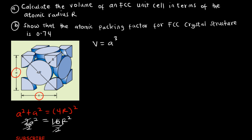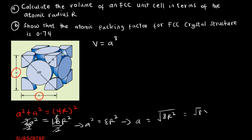Dividing both sides by 2 gives A² = 8R². Taking the square root, A = √(8R²) = √8 × √(R²). The square root of 8 is 2√2, and the square root of R² is R, so A = 2R√2. We've now expressed A in terms of atomic radius R.